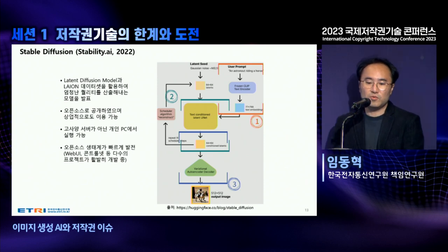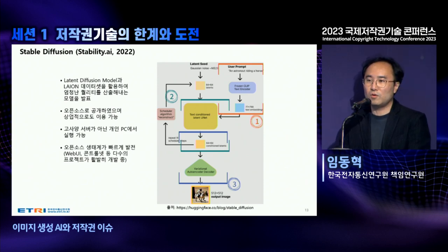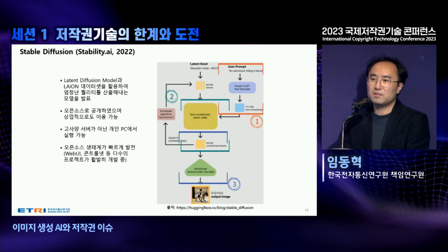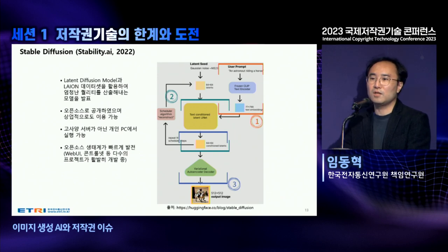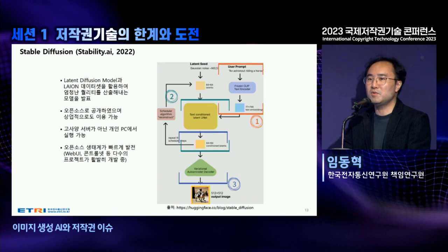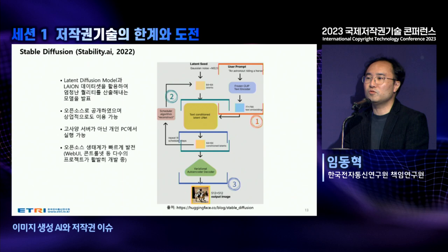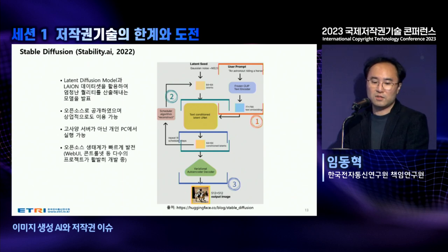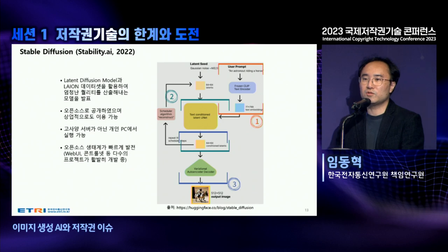Stable Diffusion uses a latent diffusion model and the LAION dataset for training. As mentioned, it is open source and commercially available. It is not used on high-specification servers but on a personal PC, so many people are using Stable Diffusion.